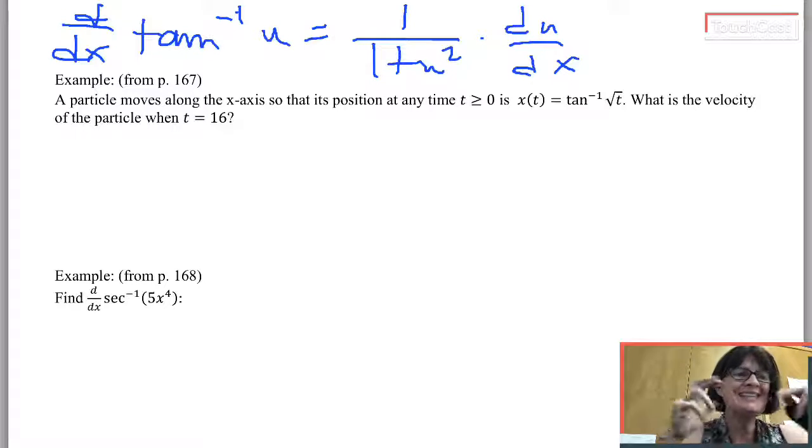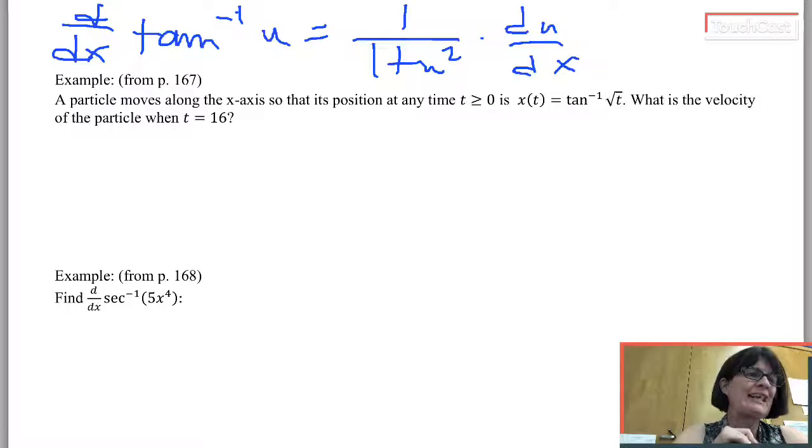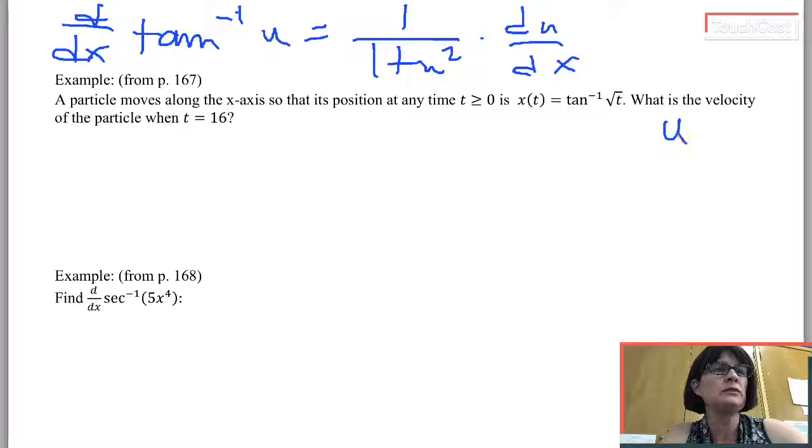So the question here, what's the inside function? What's getting inverse tangented? That's the square root of t. So in this case, u equals square root of t.